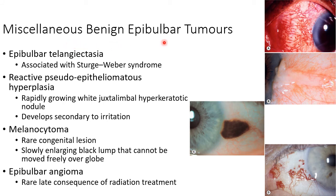Miscellaneous benign epibulbar tumors include epibulbar telangiectasia, associated with Sturge-Weber syndrome; reactive pseudoepitheliomatous hyperplasia, a rapidly growing white juxtalimbal hyperkeratotic nodule developing secondary to irritation; melanocytoma, a rare congenital lesion presenting as a slowly enlarging black lump that cannot be moved freely over the globe; and epibulbar angioma, a rare late consequence of radiation treatment.